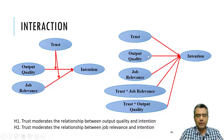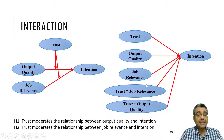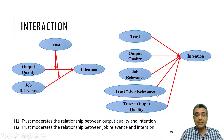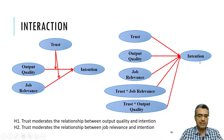Interaction or moderation for continuous variables is like a multiple regression, so all independent variables, the moderator, and the interaction terms play the independent variable role, and the dependent variable is there.